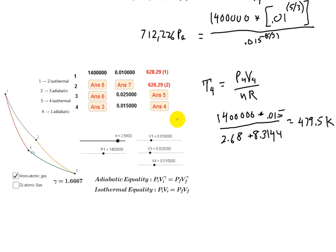And since it's isothermal, of course, if T4 is 479.5 K, then actually T3, state three and state four are on the same isotherm, because that green one is an isotherm. So T3 is equal to 479.5 K. And that takes care of the first five answers.